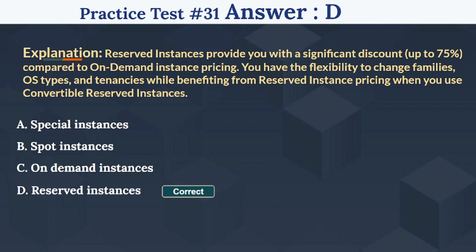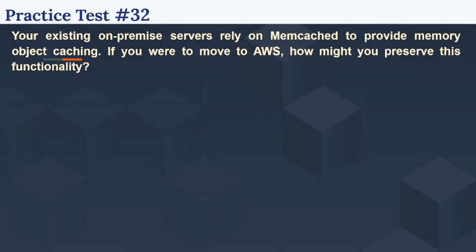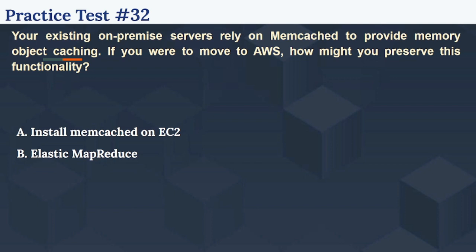So the 32nd question is: Your existing on-premise servers rely on Memcached to provide memory object caching. If you were to move to AWS, how might you preserve this functionality? The options are: Option A Install Memcached on EC2, Option B Elastic MapReduce, Option C ElastiCache, Option D None of the above.